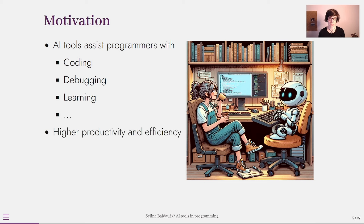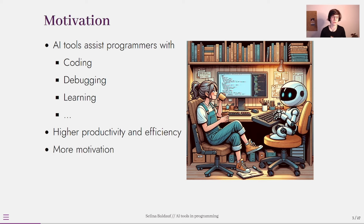This can lead to higher productivity and higher efficiency. There are some first experiments that showed that programmers code around 60% faster if they are using AI programming support. I can confirm this from my personal experience — I'm much more productive since I'm using these tools. I personally also like them because they really increased my motivation for writing code, freed up a lot of my time for more interesting coding tasks, and I spend less time dealing with errors and repetitive code.